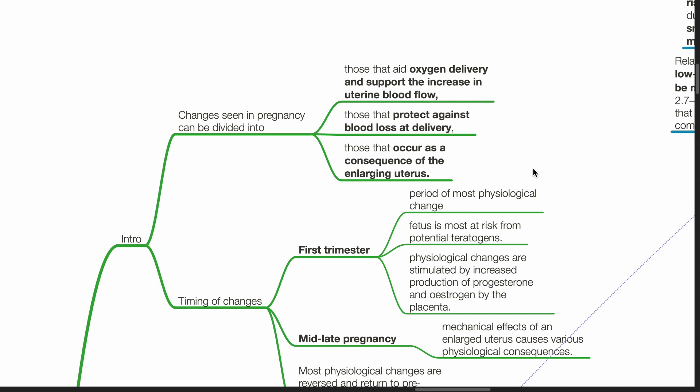Changes seen in pregnancy can be divided into those that aid oxygen delivery and support the increase in uterine blood flow, those that protect against blood loss at delivery, and those that occur as a consequence of the enlarged uterus.